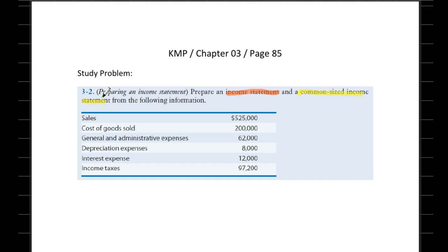We are provided with some income statement items including sales, cost of goods sold, and operating expenses such as general and administrative expenses and depreciation expenses.